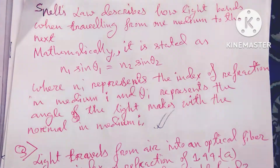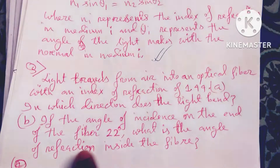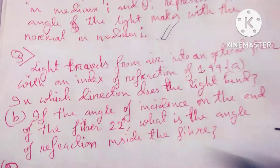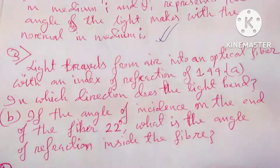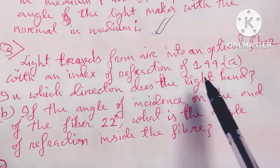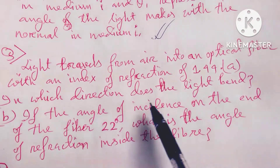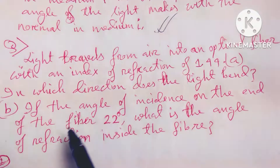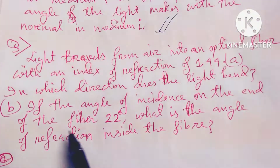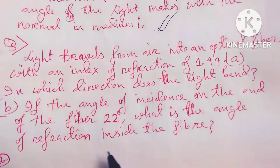Now we start to solve a problem. Light travels from air into an optical fiber with an index of refraction of 1.44. In which direction does the light bend? If the angle of incidence on the end of the fiber is 22 degrees, what is the angle of refraction inside the fiber?